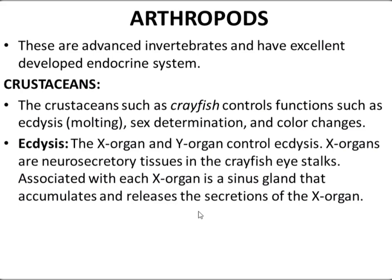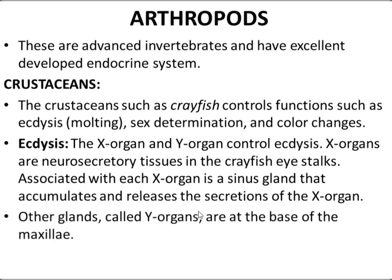Ecdysis is controlled by two organs: the X organ and the Y organ. The X organs are neurosecretory tissues in the crayfish eye stalks, and these are associated with the sinus glands that accumulate and release the secretions of the X organs. The Y organs are two glands located at the base of the maxilla.